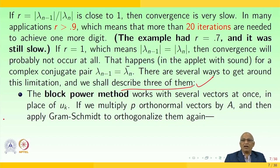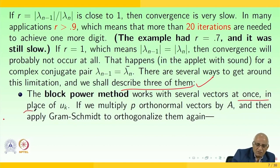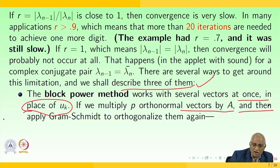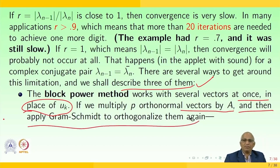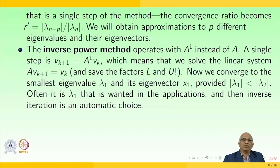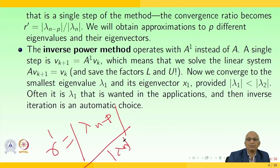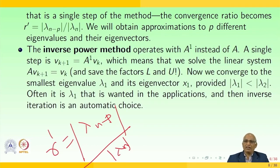There are several ways to get around this limitation and we shall describe three of them. The block power method works with several vectors at once in place of uₖ. If we multiply p orthonormal vectors by A and then apply Gram-Schmidt to orthonormalize them, we end up with r′ = |λₙ₋ₚ / λₙ|, obtaining approximations to p different eigenvalues and corresponding eigenvectors.